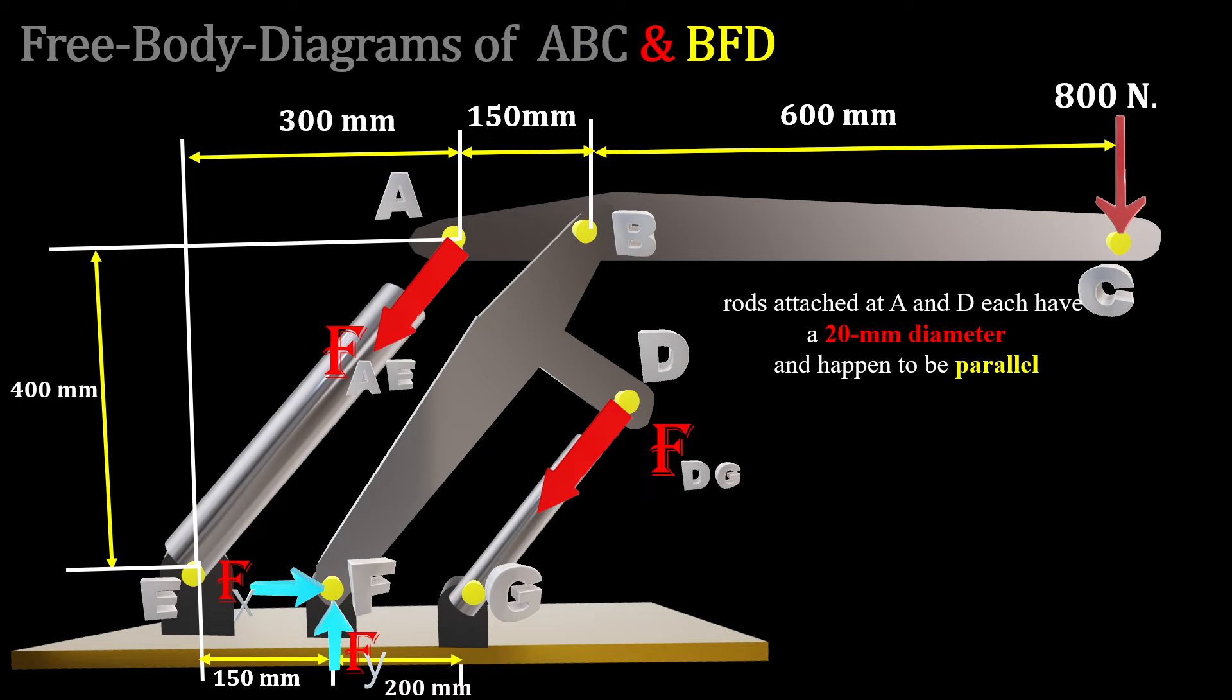We know that the rods attached at A and D each have a 20 millimeter diameter and happen to be parallel. That's an important part of the problem. If they are parallel, the same ratio which applies to cylinder AE applies to cylinder DG in terms of calculation of the forces. This is a compression force, it compresses the member as well as the joint.